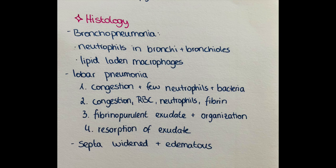In the third stage, grey hepatisation, there is fibrinopurulent exudate and organisation of fibrin strands. Hemosiderin may be visible as red blood cells are lysed, and fewer bacteria and neutrophils are present as the inflammatory reaction tapers off. In the fourth stage, resolution, exudate is resorbed and the lung parenchyma more closely resembles healthy lung. Common to both types of pneumonia: septa are widened and edematous, with increased inflammatory cells present to fight the infection.